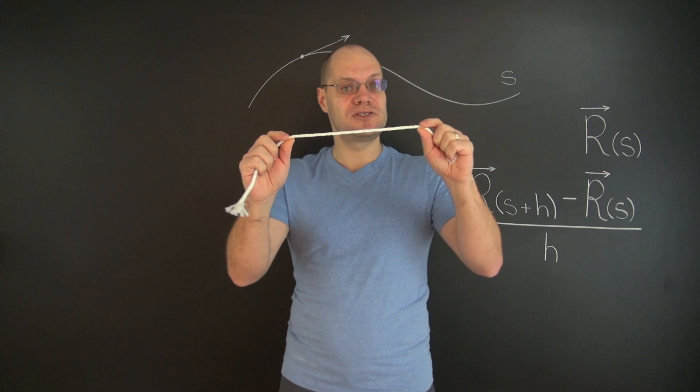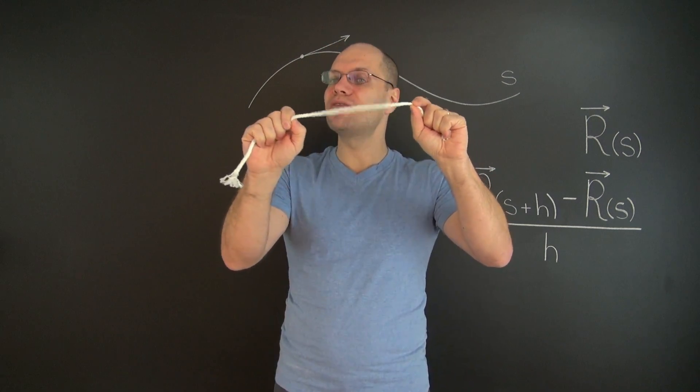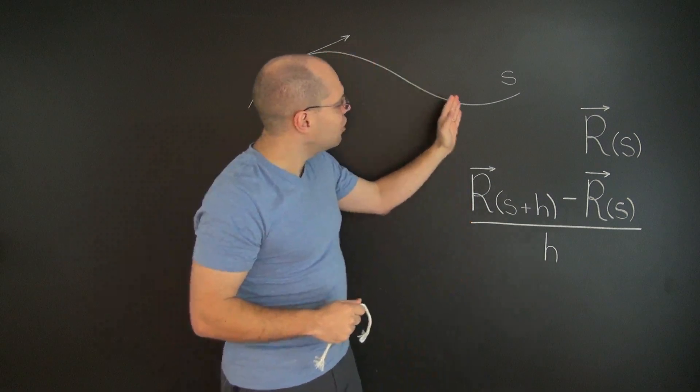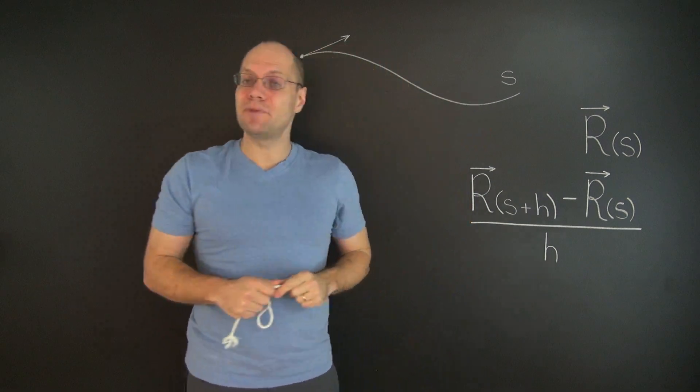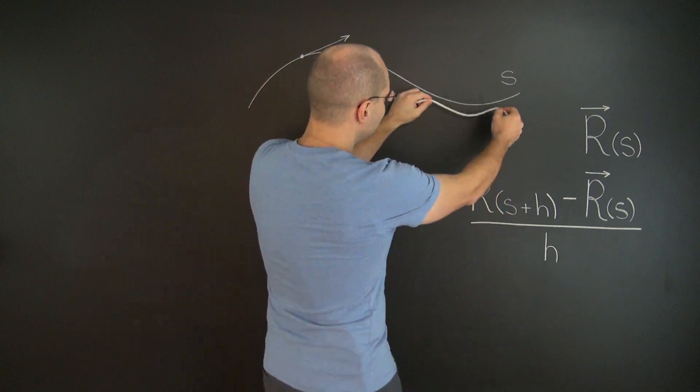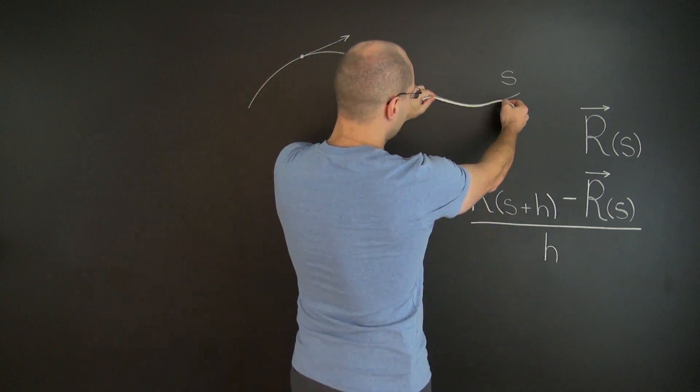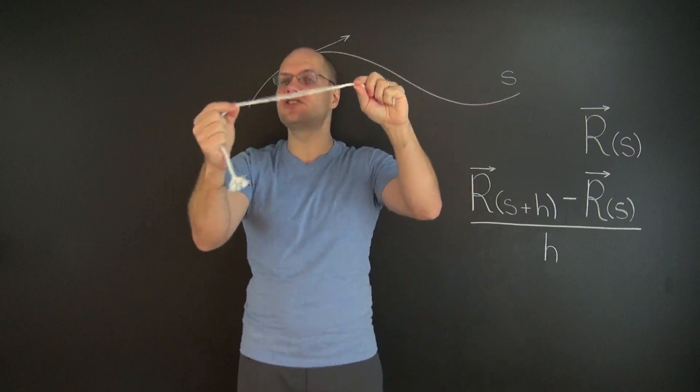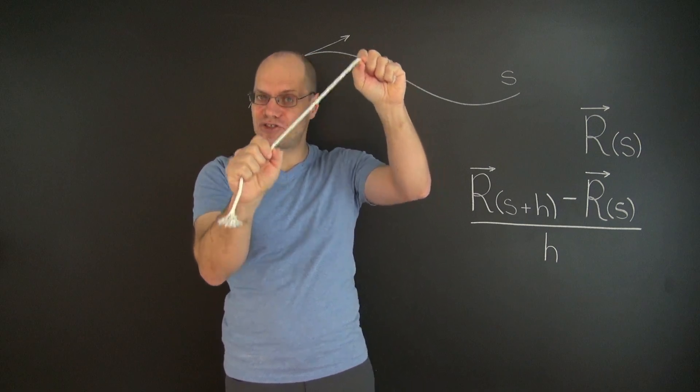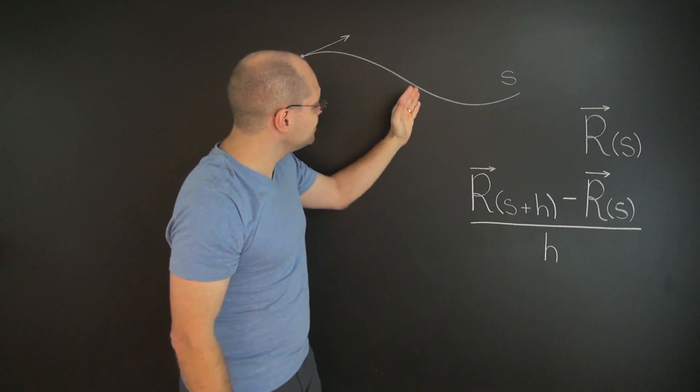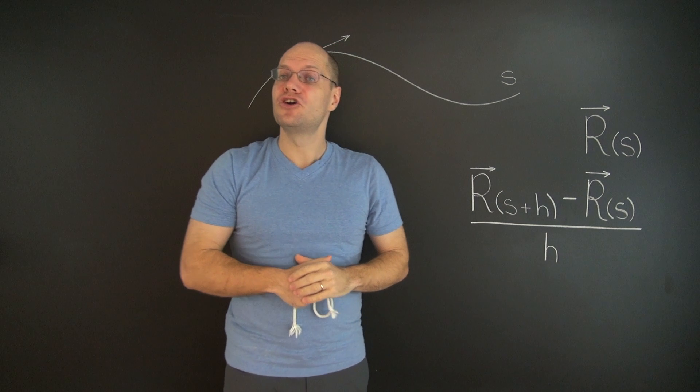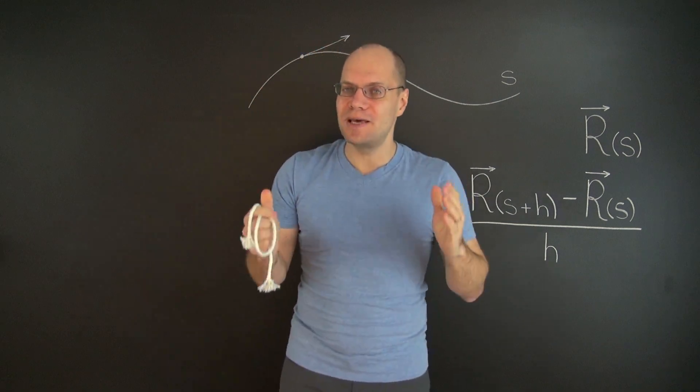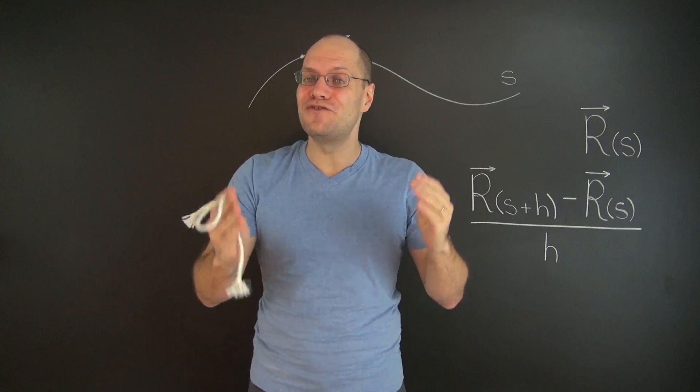So once again, suppose that we have a very flexible string, which however cannot be stretched. And in order to measure the arc length of a segment on a curve, have your string follow that curve perfectly. And then to find the corresponding length, take the string away from the curve and straighten it out. And then the length of the straight segment equals the length of the corresponding curved segment on the curve. So I hope that this makes the concept of arc length sufficiently clear to move forward.